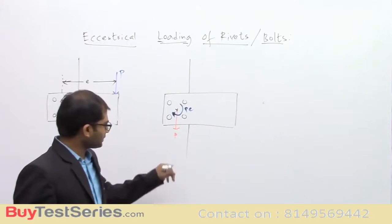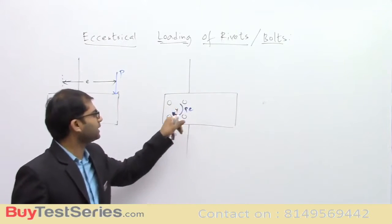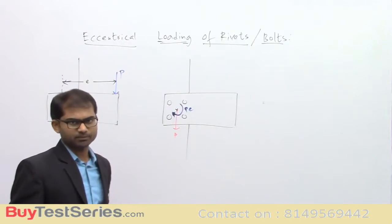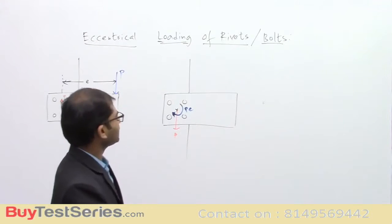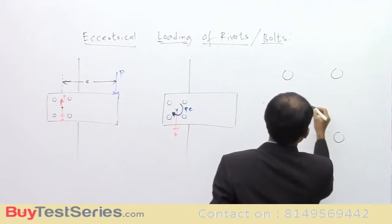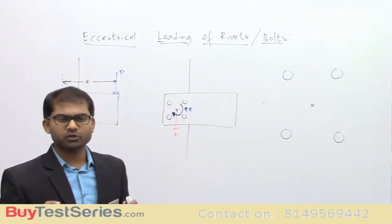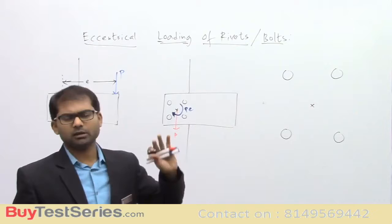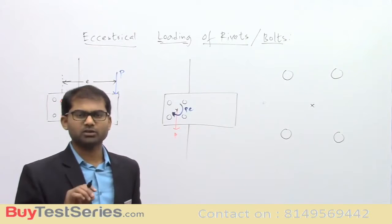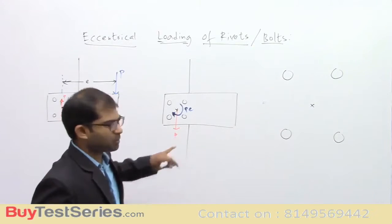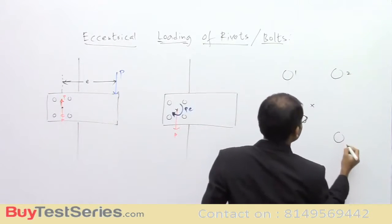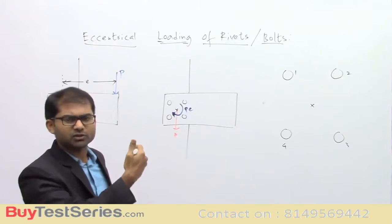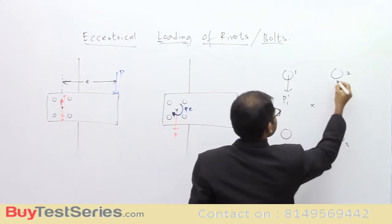Since force P now passes through the centroid, it is equally distributed on each and every rivet. I'm drawing four rivets numbered one, two, three, four with the centroid shown. There is no compulsion that all rivets must be on the corners of a square — they can be arranged in any fashion; we simply find the centroid and perform the analysis. The effect of force P on each rivet produces forces P1', P2', P3', P4' all in the same direction, parallel to the area of projection of the rivets.